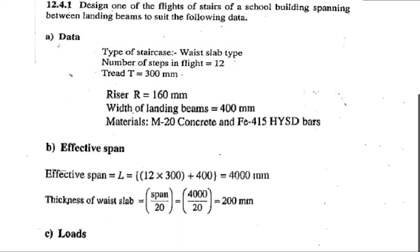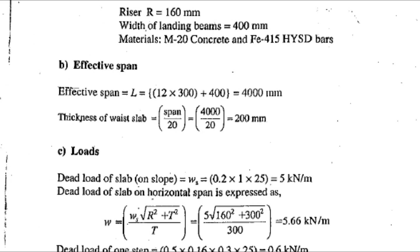Hello friends, in this video we are going to see how to design the staircase, particularly waist slab staircase. The data given is: type of staircase is waist slab type, number of steps in flight is equal to 12, tread T is equal to 300 mm, riser R is equal to 160 mm, width of landing beams is equal to 400 mm, and materials used are M20 concrete and FE415 HYSD bars.